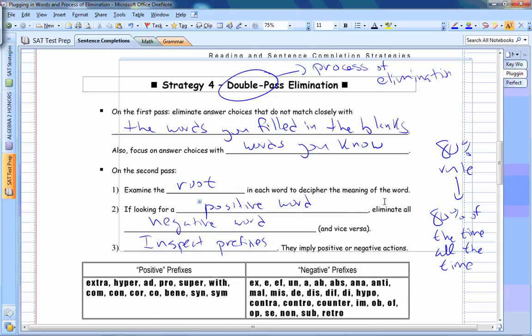So again, the first pass is to eliminate choices that don't match the words you put in the blank. You've got to focus on words you know. And then, of course, if you're down to one choice, you select it, you're done. If not, then you can do a second pass to help you continue eliminating so that you can get the right answer. So that's why I was saying the first pass for eliminating, the second pass for helping select the correct answer, because after the second pass, you've got to select an answer.